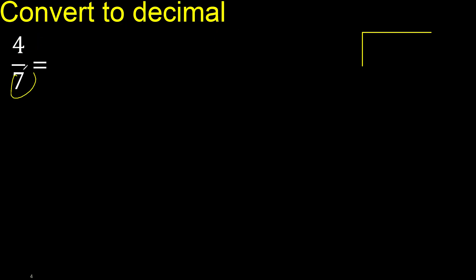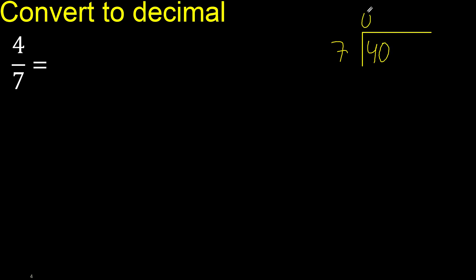4 divided by 7. 4 is less, therefore complete — always complete with 0. Here: 0 point. Point only once.